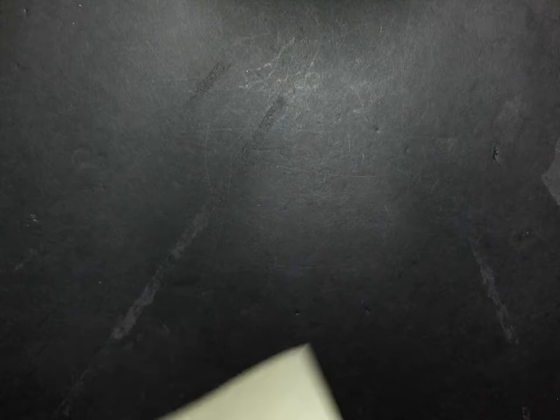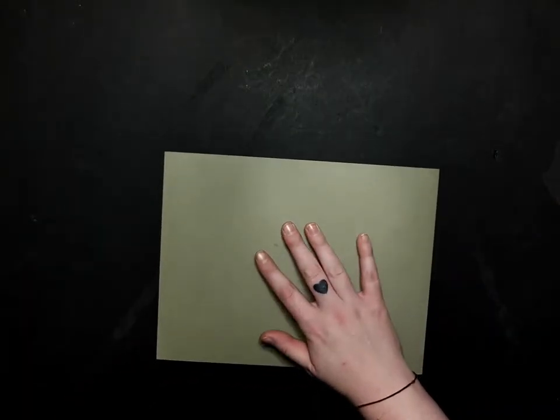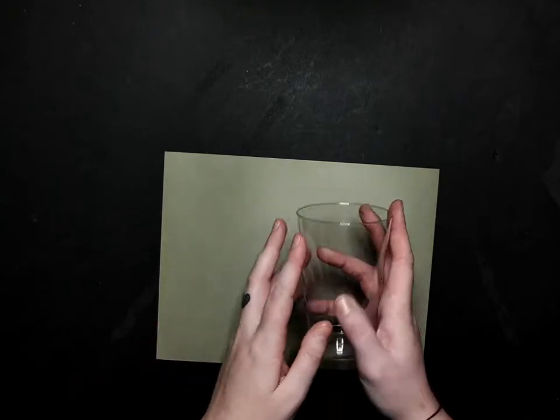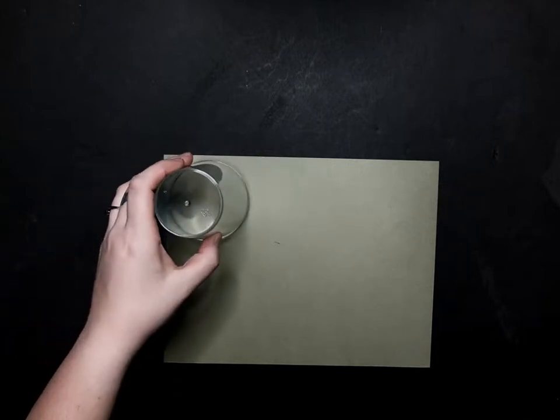The first thing we need to do in order to create these ornaments is to trace our circles. So grab a sheet of paper and something to trace the circles with. I'm using a cup because it's what I happen to have on hand. You can use whatever you have. Each ball works perfectly with about 15 to 20 circles. So we're going to start tracing those now.